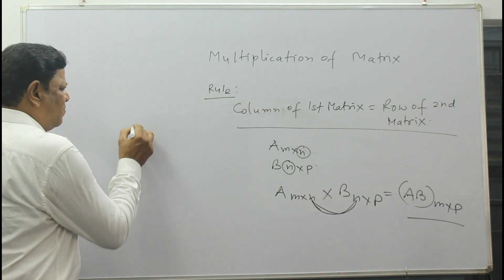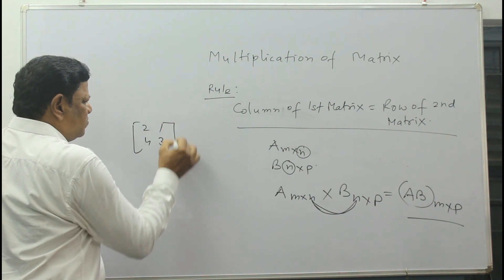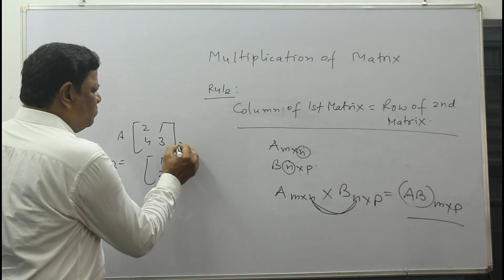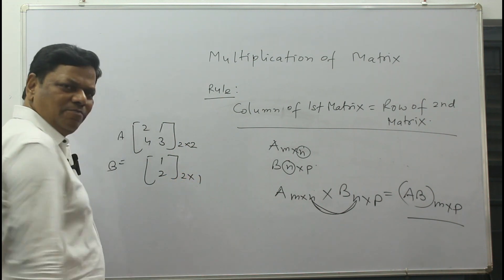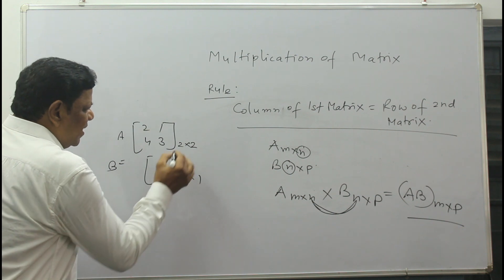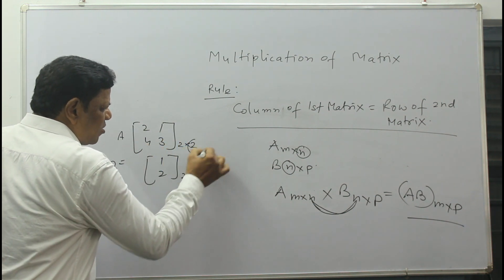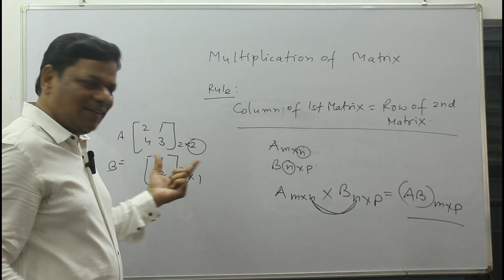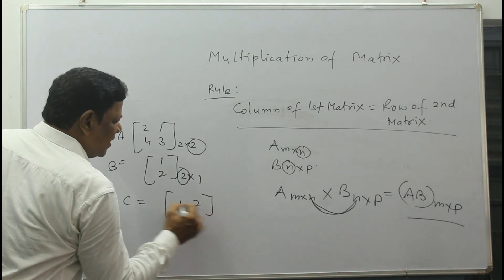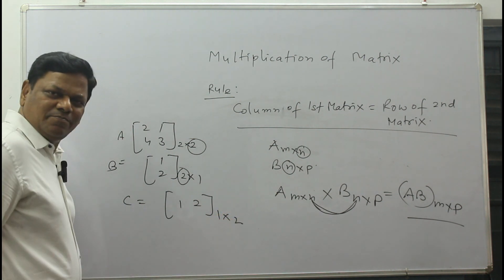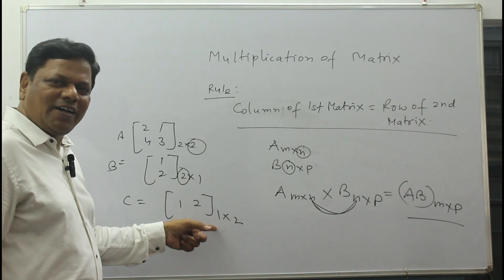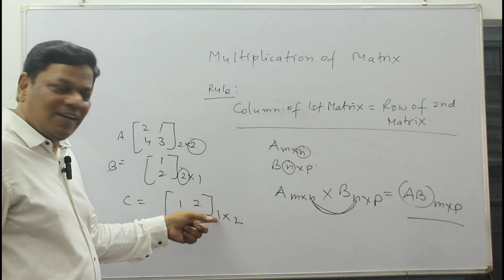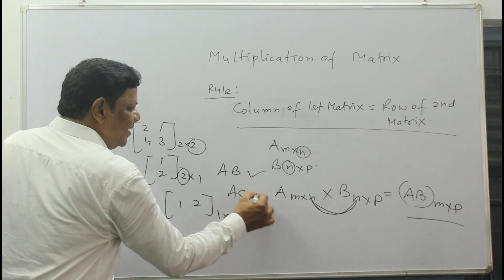One small example: let matrix A be given as [2, 1, 4, 3] — a 2×2 matrix — and B is given as [1, 2] — a 2×1 matrix. So A has 2 rows and 2 columns, B has 2 rows and 1 column. The column of A is 2 and the row of B is 2. These two are equal, so I can multiply A and B. But if another matrix C has 1 row and 2 columns, then A×C is not possible because the column of A is 2 but the row of C is 1 — they do not match.